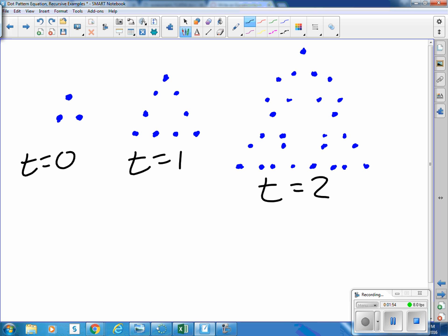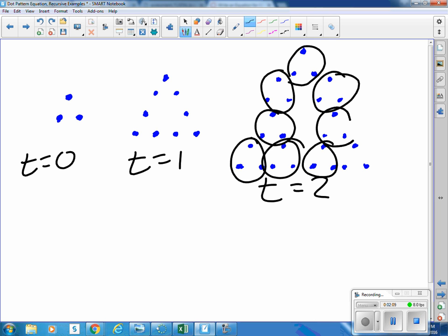Okay, starting out with three dots, then I have nine. Let's see, I have a group of three there, a group of three there, a group of three there. So I have nine groups of three, so I have 27.